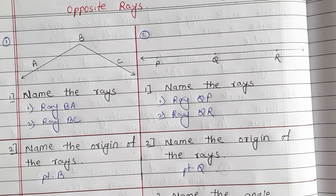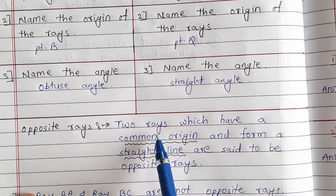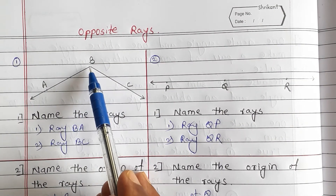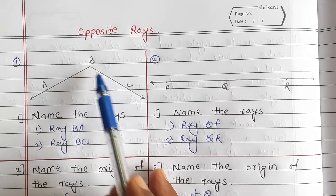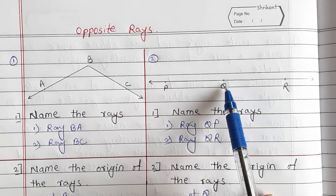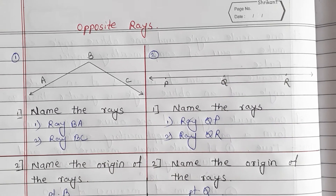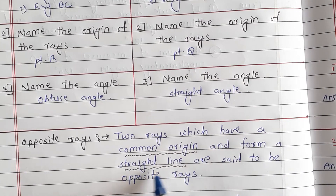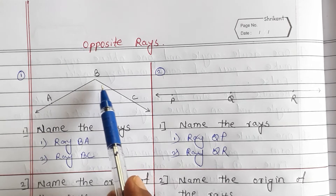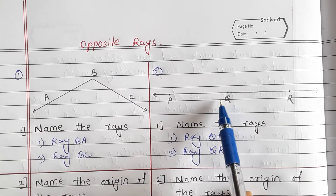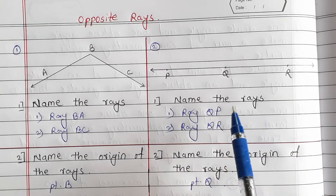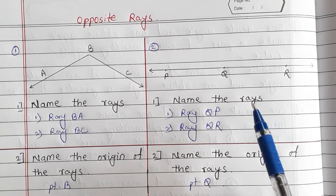If you have two rays which have a common origin, you can understand the definition of opposite rays. Ray BA and Ray BC have common origin B. Ray QP and Ray QR have common origin Q. The second concept is that if two rays form a straight line, that forms a straight angle. If two rays have a common origin and form a straight line, they are opposite rays.